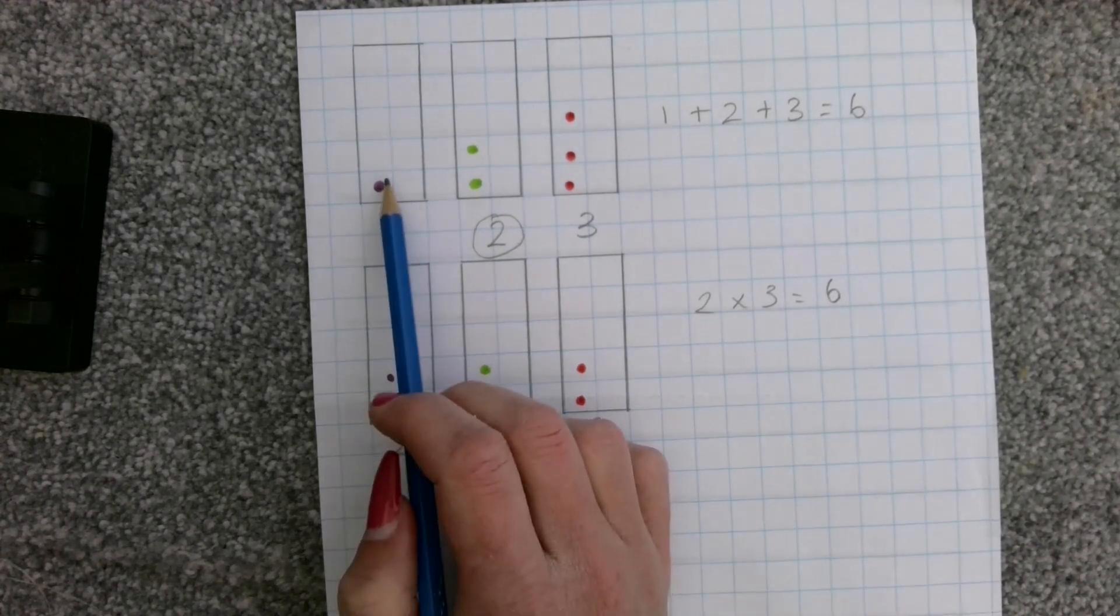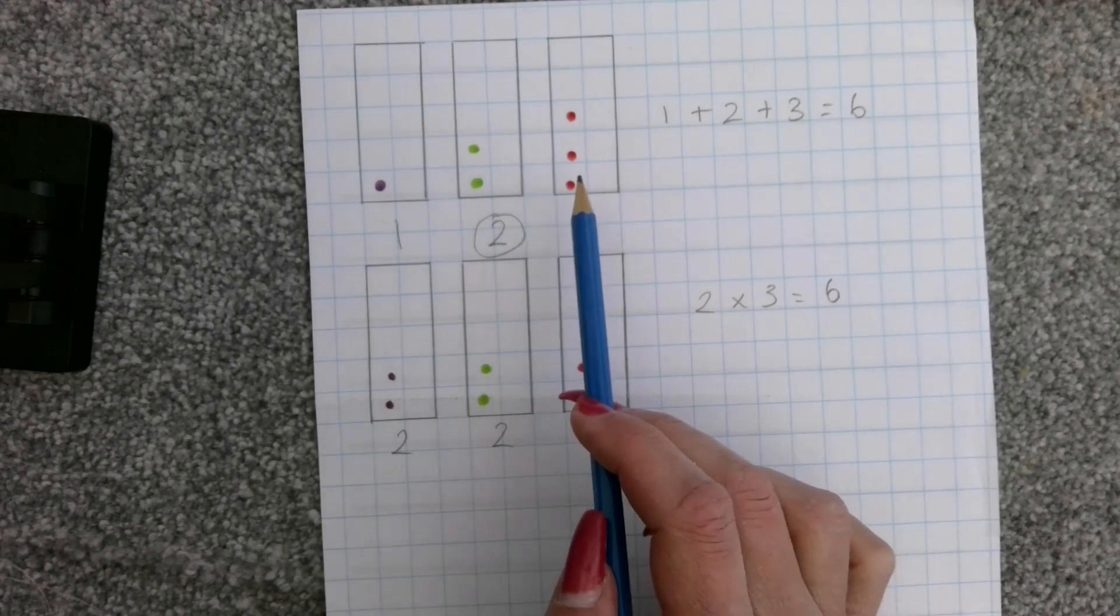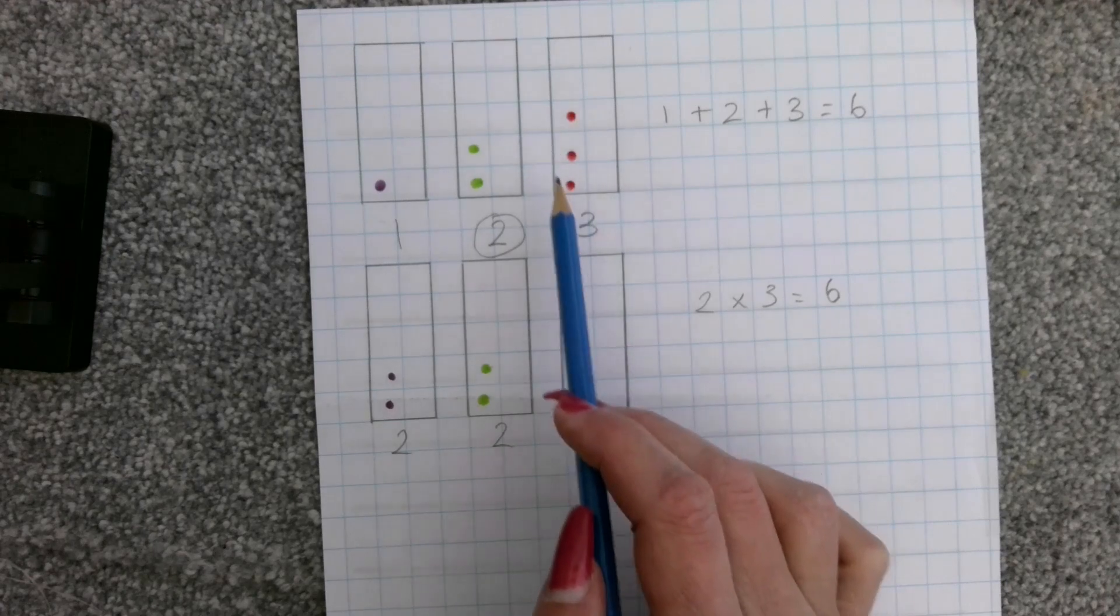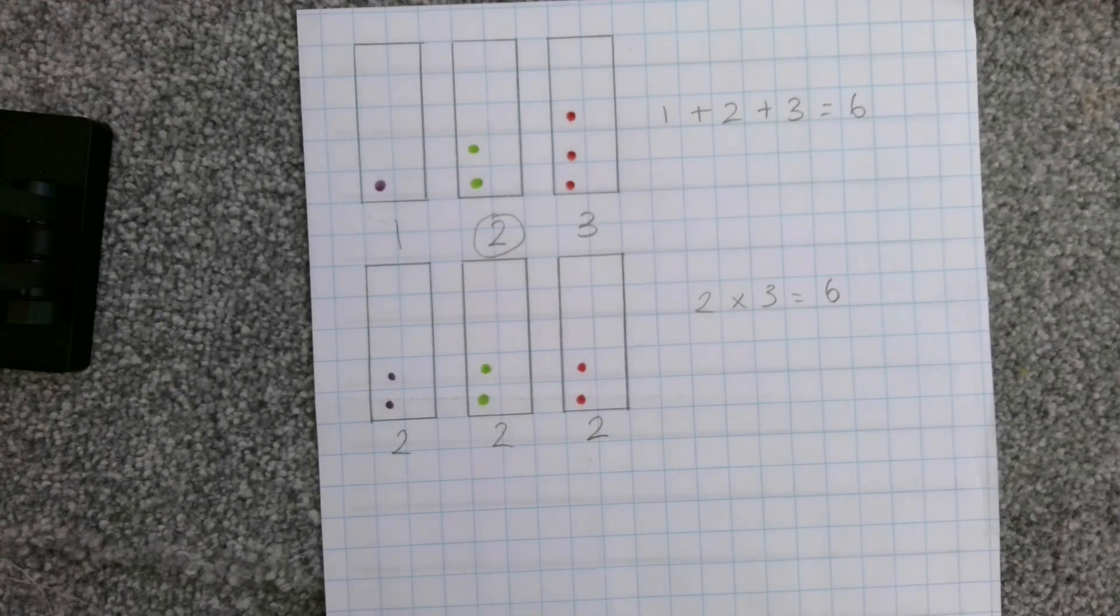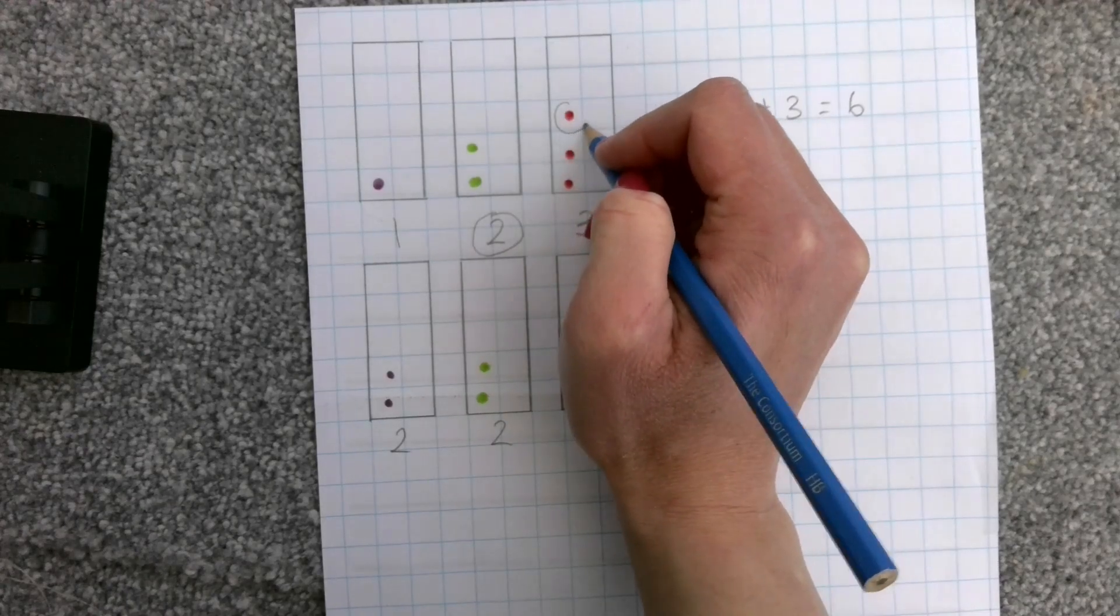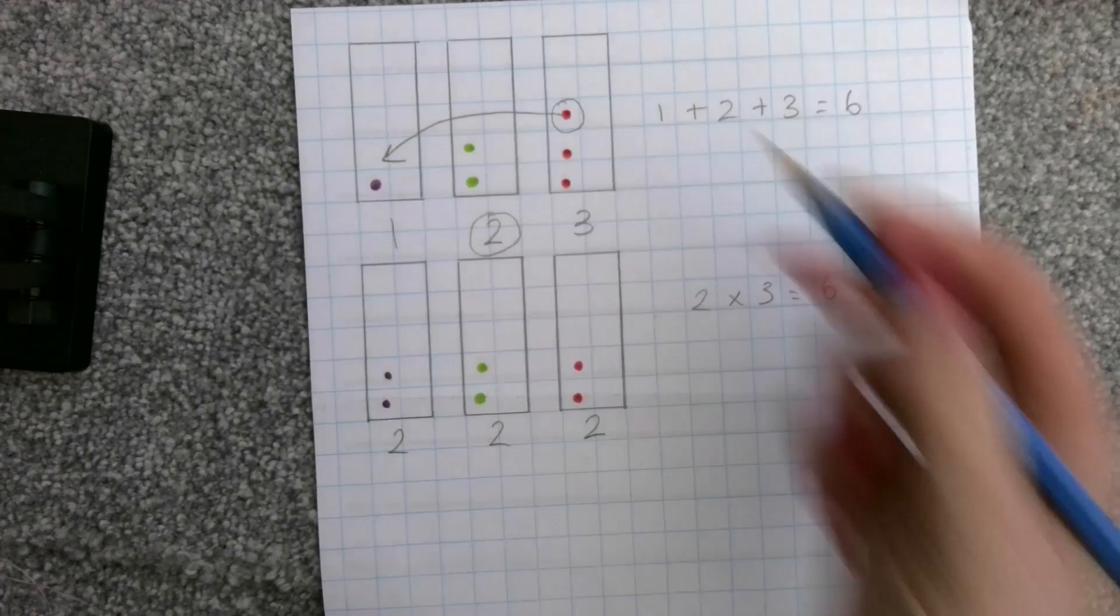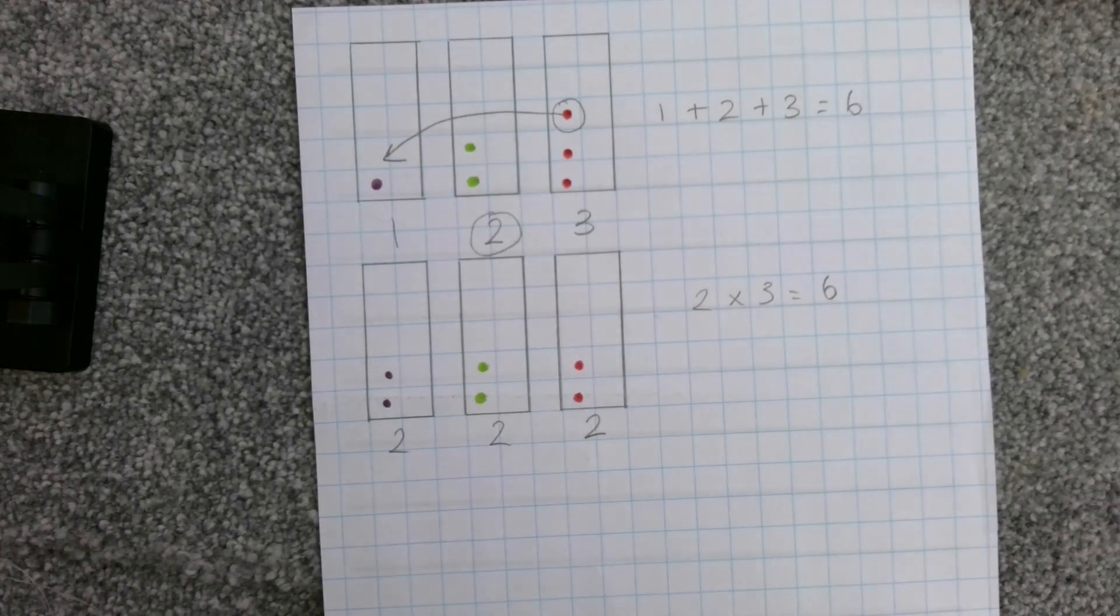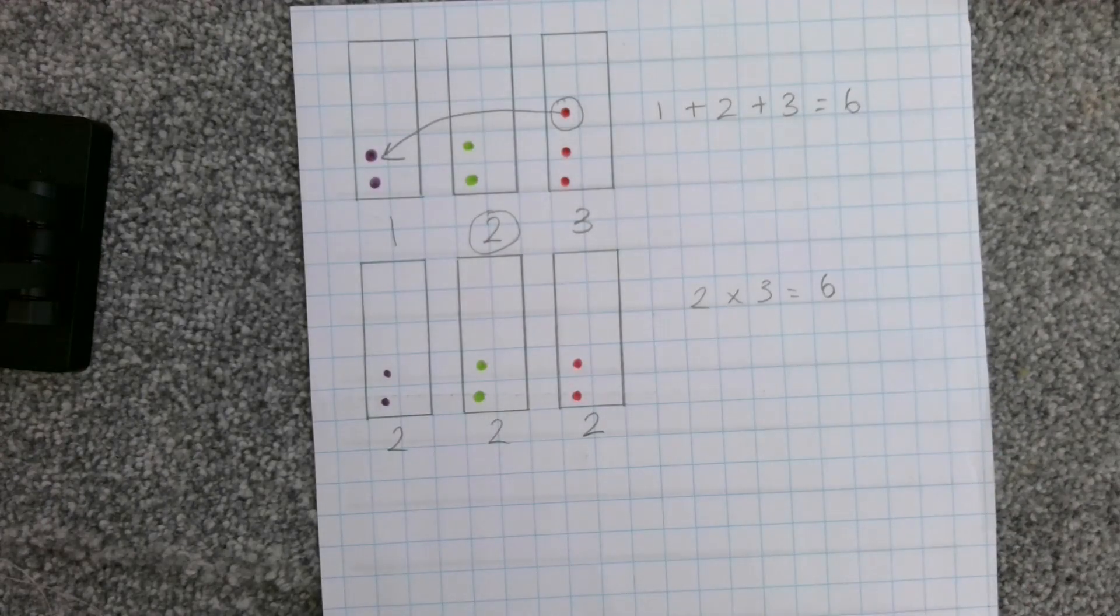This one only has one in it to begin with. This one already has two, and this one has three. How am I going to make this one and this one both have two in? Oh, this one over here has moved over here so that there are two in each box.